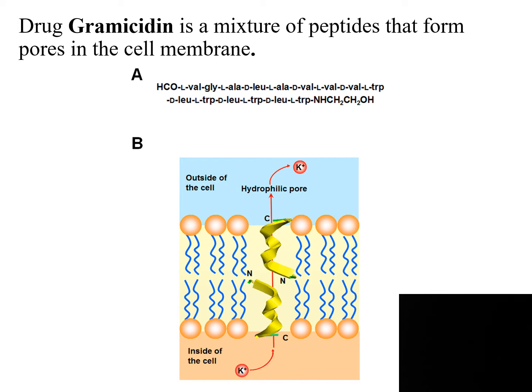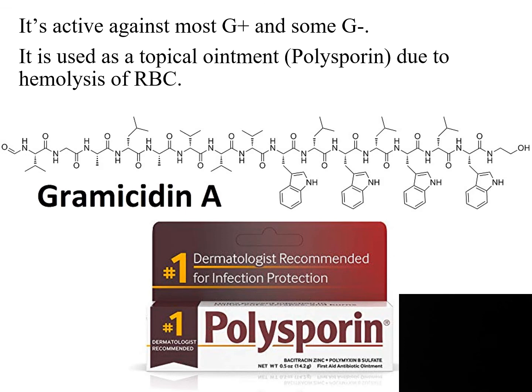Therefore, the cell can rupture and the organism will be destroyed. Gramicidin is active against most gram-positive and some gram-negative organisms. It is used only as a topical ointment because it destroys red blood cells. It is found in polysporin.